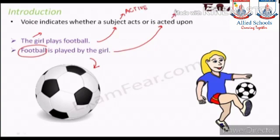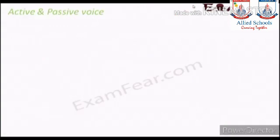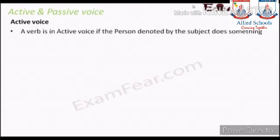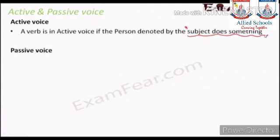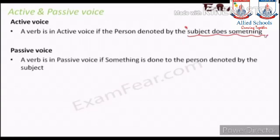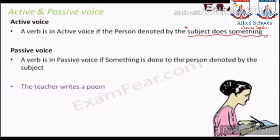A verb is in active voice if the person denoted by the subject does something — that is, the subject is the doer of the action. A verb is in passive voice if something is done to the person denoted by the subject.